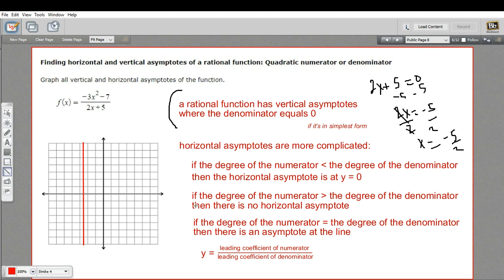So that follows this rule. If the degree of the numerator is greater than the degree of the denominator, then there is no horizontal asymptote. So we don't need to graph anything in here.